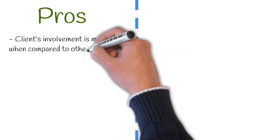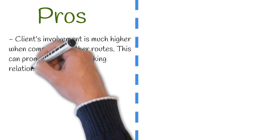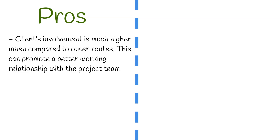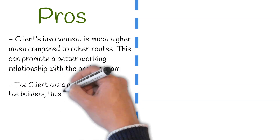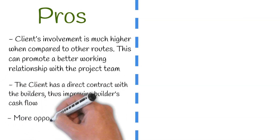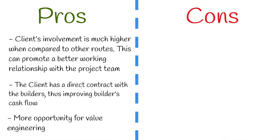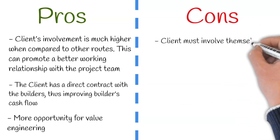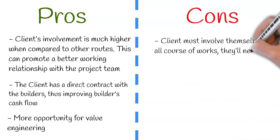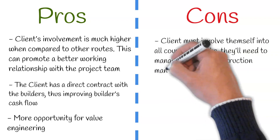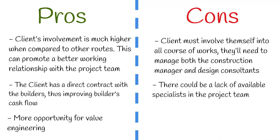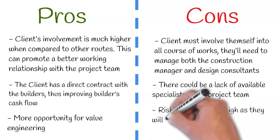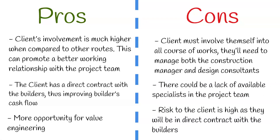Pros to this route include: the client's involvement is much higher when compared to other routes, which can promote a better working relationship with the project team. The client has a direct contract with the smaller contractors, thus improving their cash flow, and there's more opportunity for value engineering. Cons include: the client must involve themselves in all courses of works and will need to manage both the construction manager and the design consultants. There could be a lack of available specialists in the project team, and risk to the client is high as they will be in direct contract with the smaller contractors.